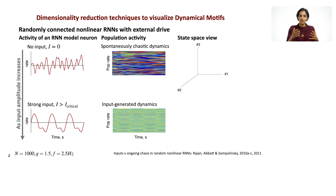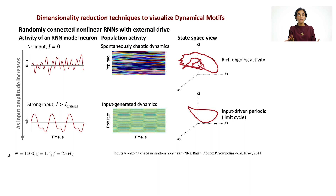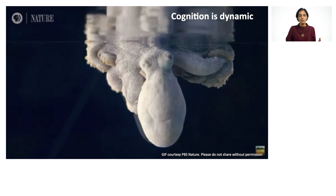A state space view is just a coordinate system derived by applying dimensionality reduction techniques to visualize dynamical motifs. In the spontaneously active case, the activity of the entire network can be seen to traverse some kind of trajectory in the state space. In the case when the network turns off its intrinsic variability and becomes entrained to the frequency of the drive, the same state space view becomes one where you can see this periodic cyclic oscillatory kind of behavior.